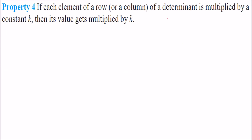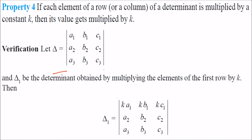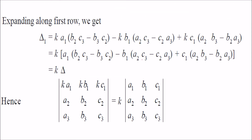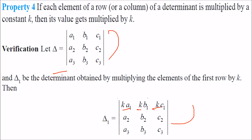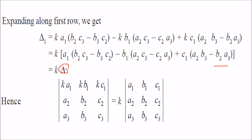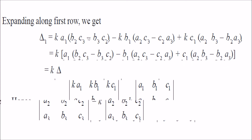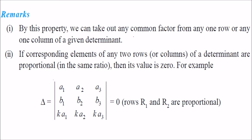Property 4: if each element of a row of a determinant is multiplied by a constant k, then its value gets multiplied by k — the whole determinant value is multiplied by k. So if you multiply the first row elements by k — giving k·a1, k·b1, k·c1 — and solve, you see delta = k times the initial delta. This means you can take k out of any one row or any one column, giving k times the determinant of the original.